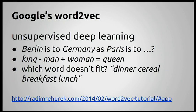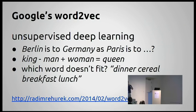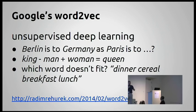Google published an algorithm called Word2Vec, which is an unsupervised machine learning method. After you train it, it can answer questions like: Berlin is to Germany as Paris is to — and the answer should be France.